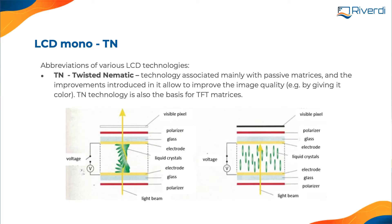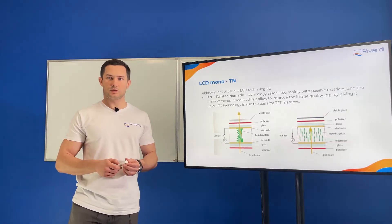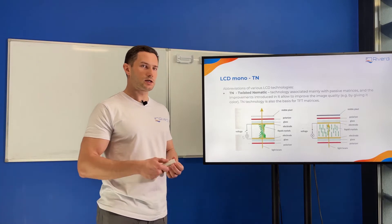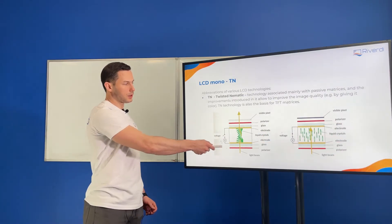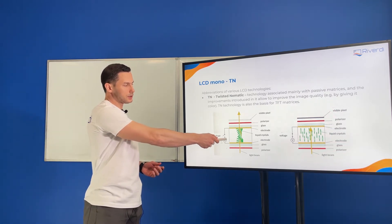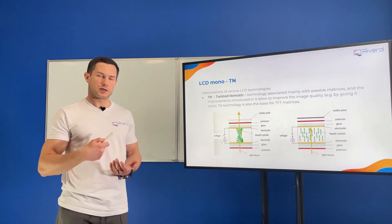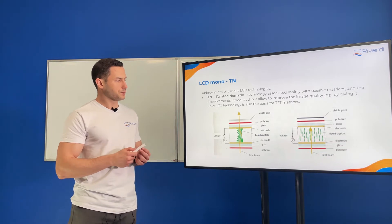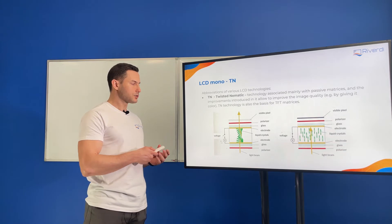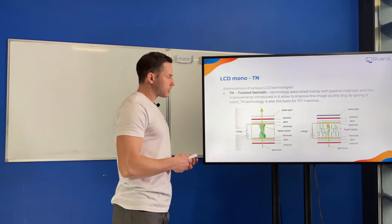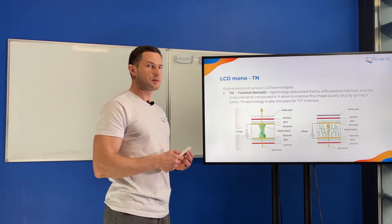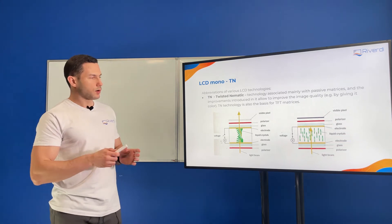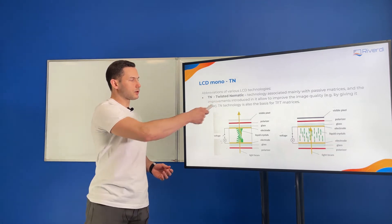Starting with the basics: LCD display technology is related to liquid crystals. Liquid crystal is a very special material that can change the polarization of light. It's actually liquid — it's put between two glasses in every LCD display. Because of special properties, we can change the polarization of the light using electrical voltage, generating an electrical field between the two glasses. The most basic LCD display is a TN, which we call Twisted Nematic.